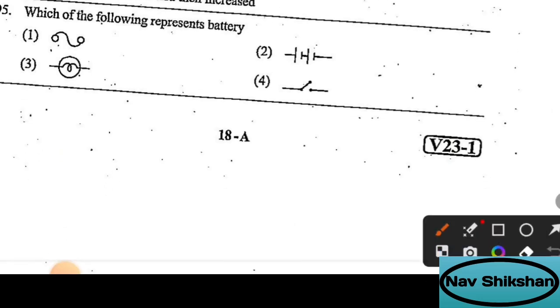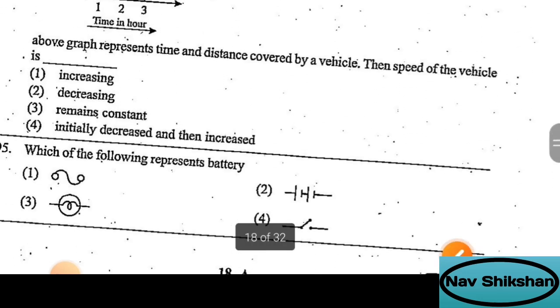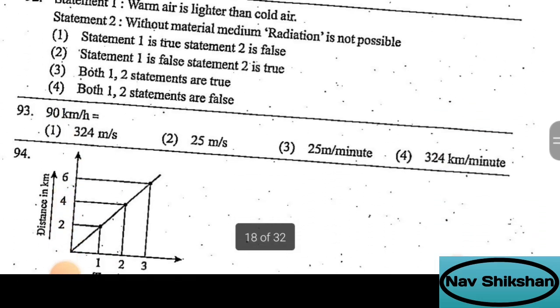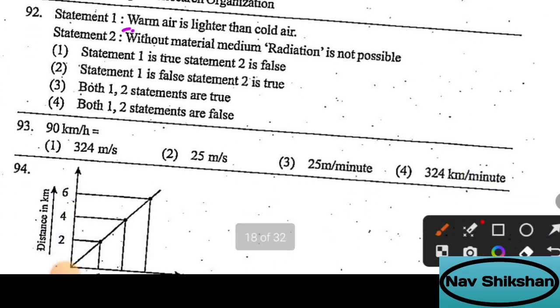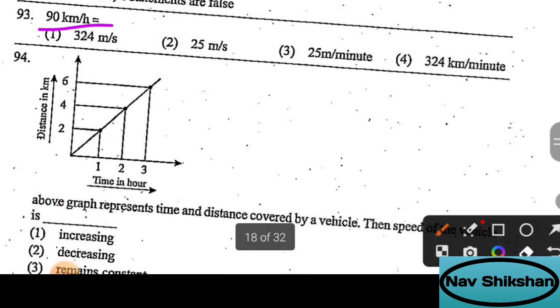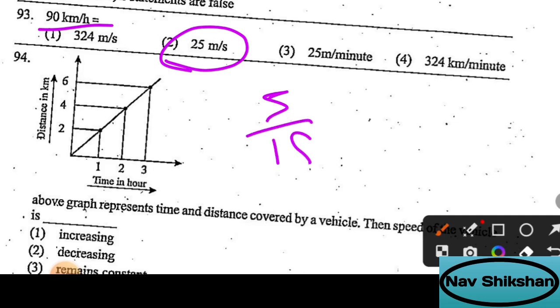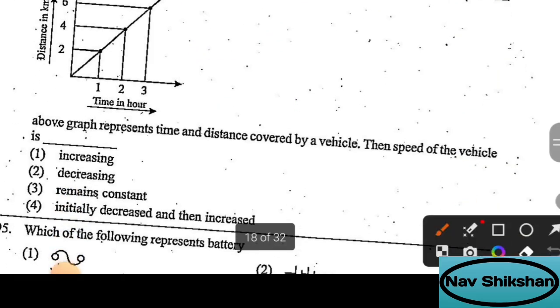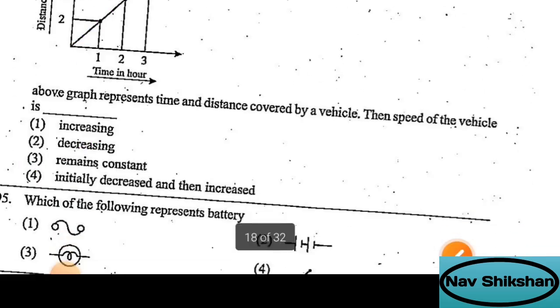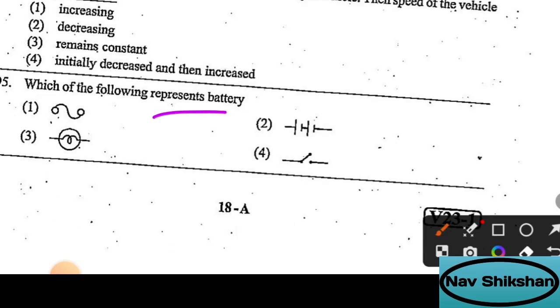Which of the following represents battery? If you want the question in Hindi as well, I will explain. Question 95 was ISRO full form - Indian Space Research Organization. Question 92: warm air is lighter; the radiation statement is that radiation doesn't need a medium, which is correct. Option number 2 represents battery; this represents the key, this represents the bulb. Remember this one.